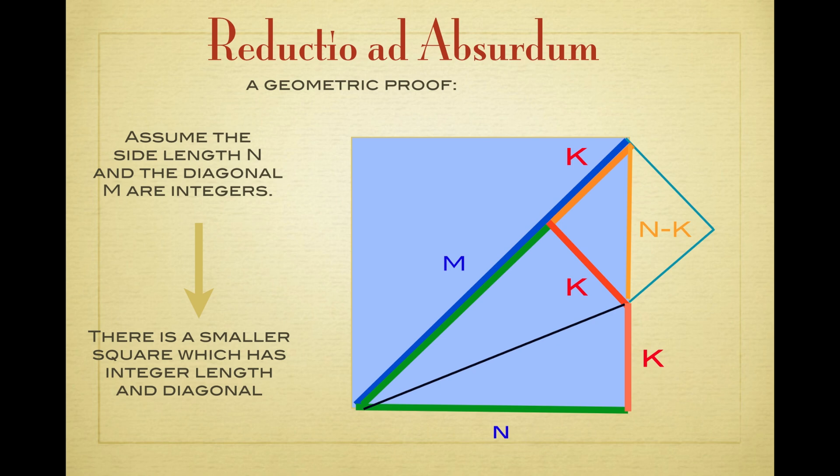That's why one calls this reductio ad absurdum. It cannot continue until we have zero length. It's a beautiful proof, and it has the advantage that it doesn't need the prime factorization like the other proof.